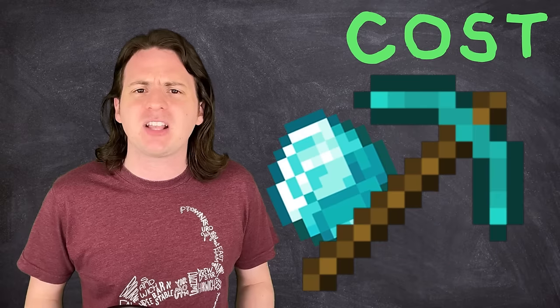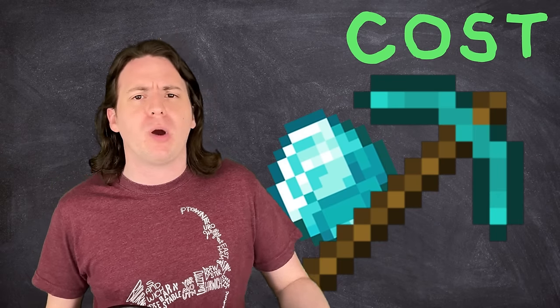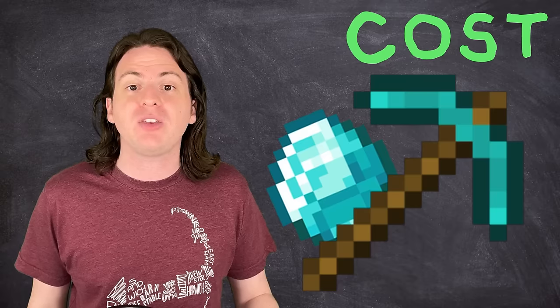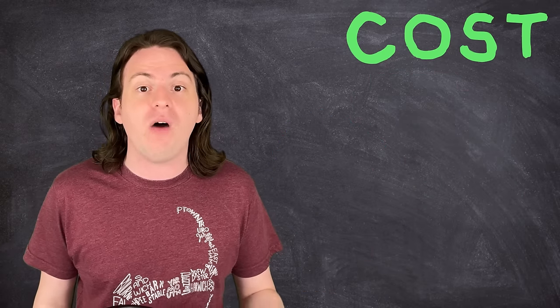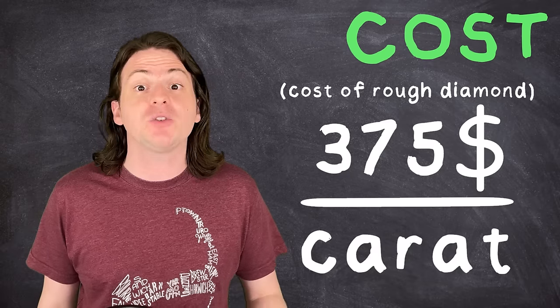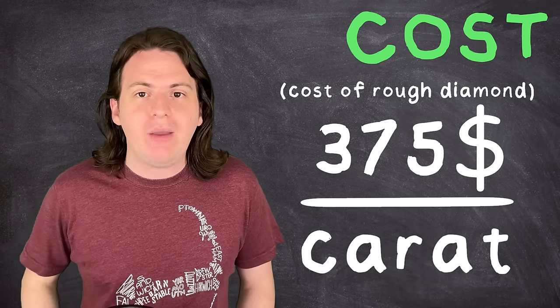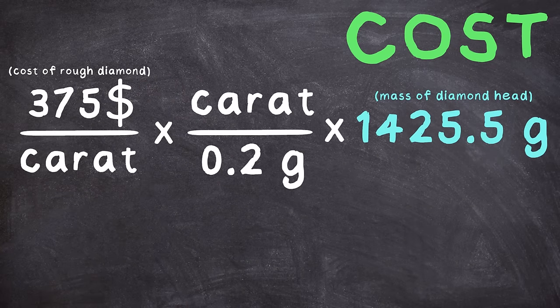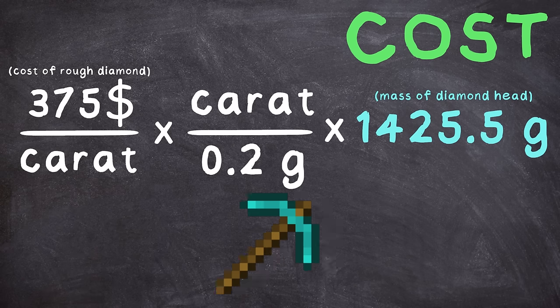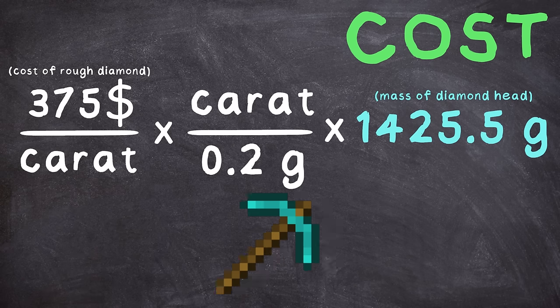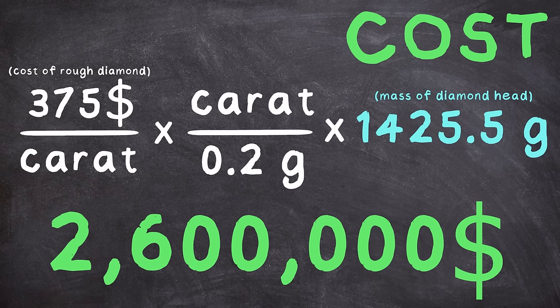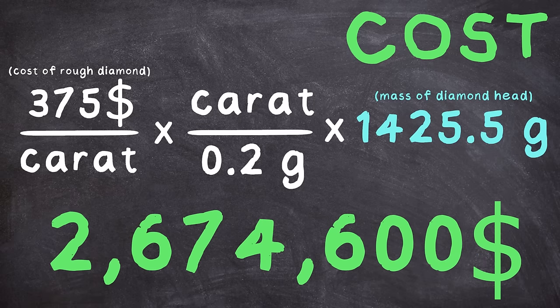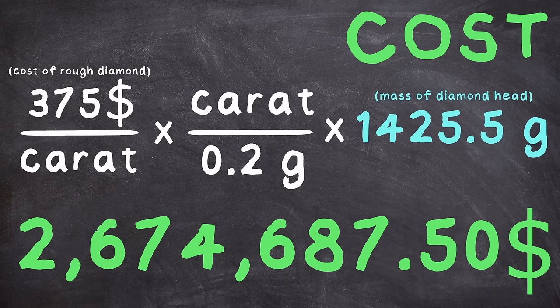The price of diamond can vary wildly depending on cut and color, but we don't need our pickaxe to be crystal clear with perfect facets. So, we'll use the current price for a rough diamond of $375 per carat. One carat is equal to 0.2 grams, putting the final cost for a pickaxe head made entirely of diamonds at $2,674,687.50.